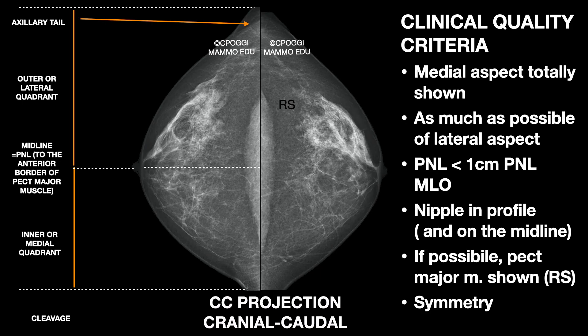Summarising, these are the clinical quality criteria for CC projection. Of crucial importance is the complete documentation of the inner quadrant and, when possible, of the cleavage too. As much as possible of the outer one. The line that connects the nipple to the anterior border of pectoralis major, or PNL, should be of the same length as measured on the MLO on the same side — it could be shorter on CC, but less than 1 cm. Nipple in profile and on the midline.